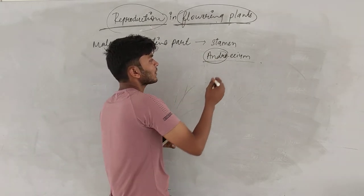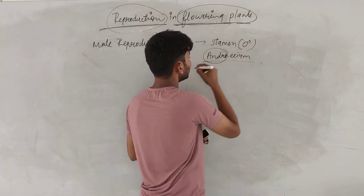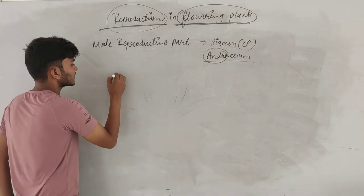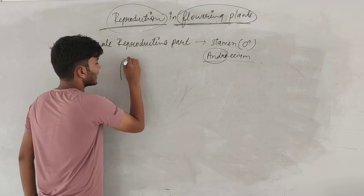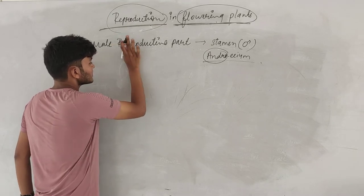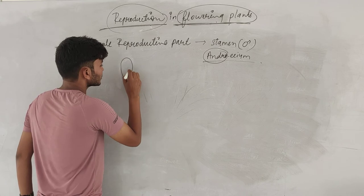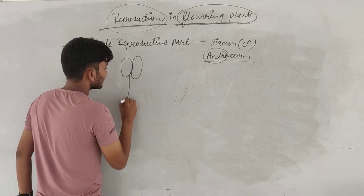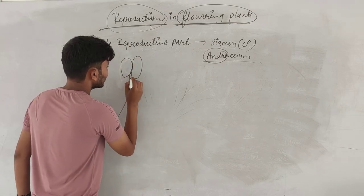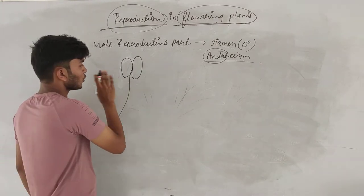Collectively stamens, what do we call? Androecium. Alright. The stamen structure is generally a bilobed structure. The stamens are generally bilobed, which is made of two lobes.